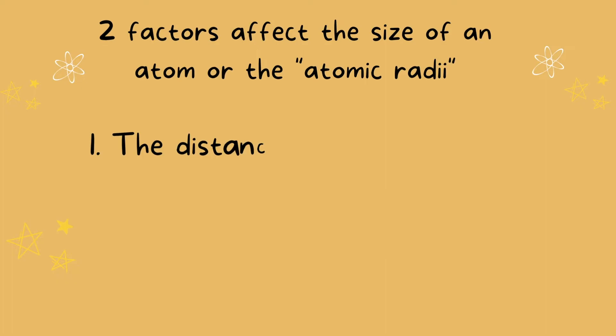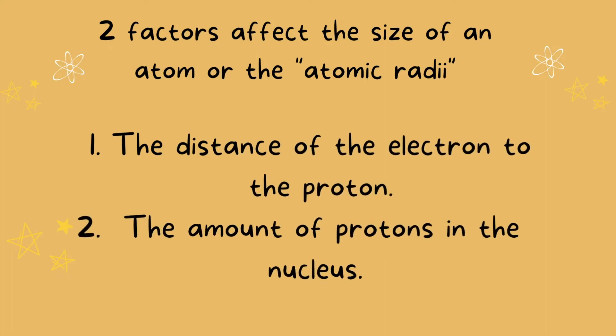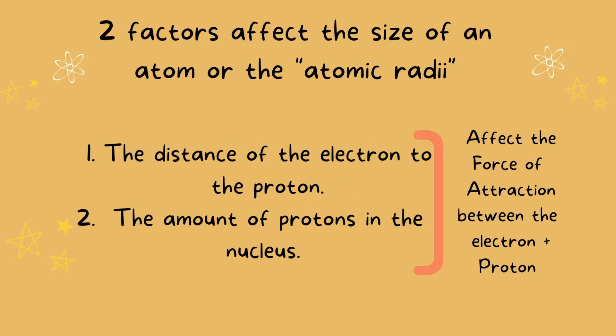One is the distance of the valence electron, or electrons in the outermost shell, and the proton within the nucleus. The second is the amount of protons in the nucleus.